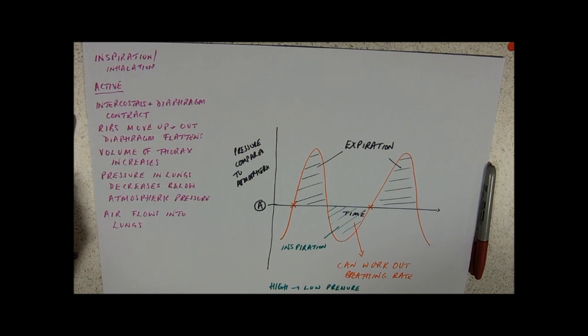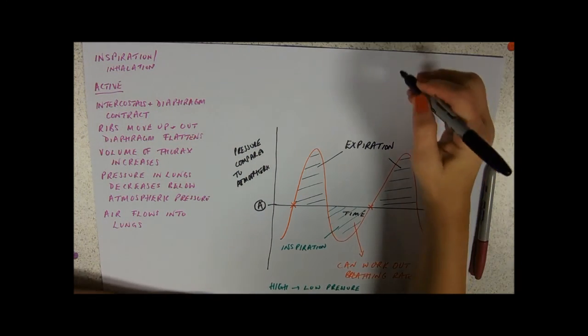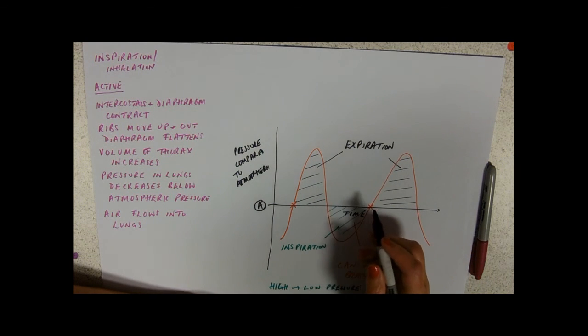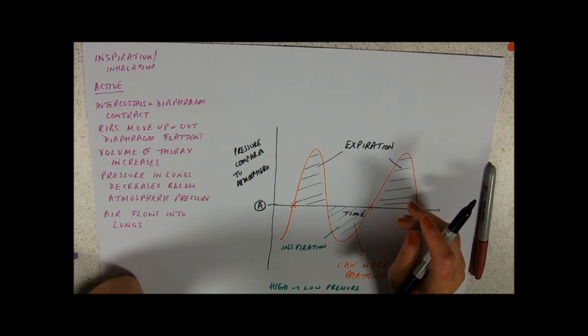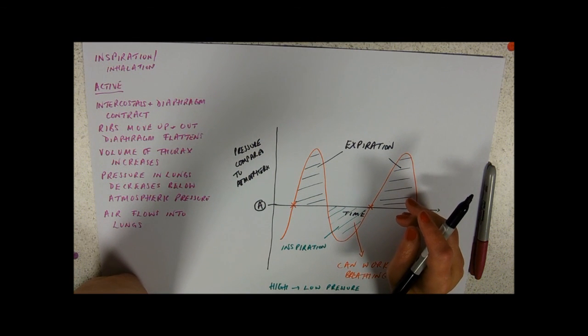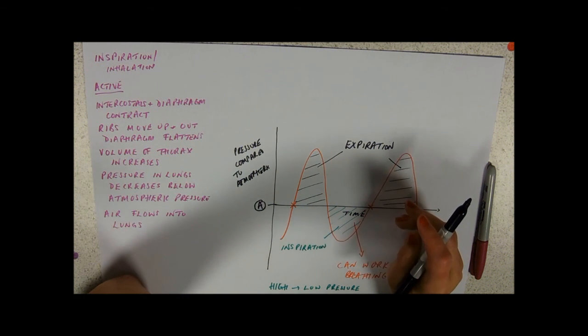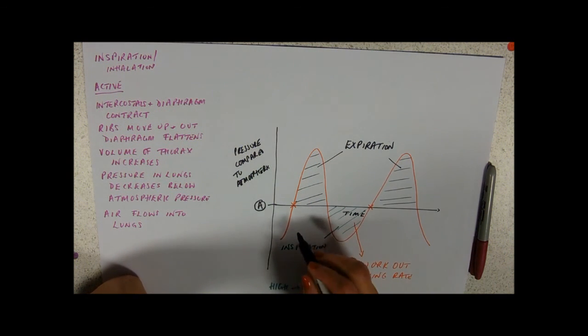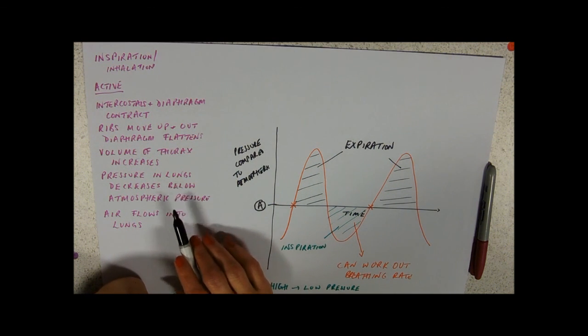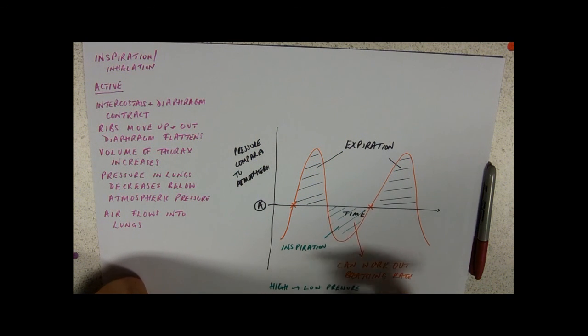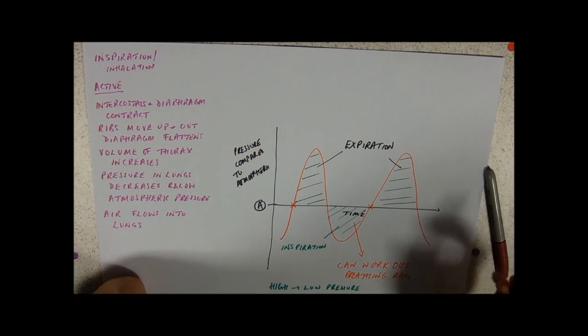If you were doing volumes of gases on a spirometer type of trace, you're going to get a pretty similar graph. Where the graph is going up, you're probably blowing into a chamber, moving it up. Where your graph is going down, you're breathing in. That one showing the atmospheric pressure just shows the importance of getting the pressure in the lungs below the atmospheric pressure to pull it in. And don't forget that wherever you've got time, you can calculate a breathing rate.